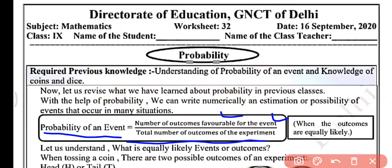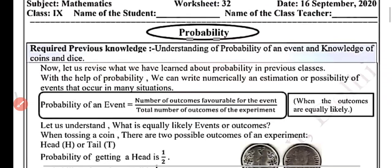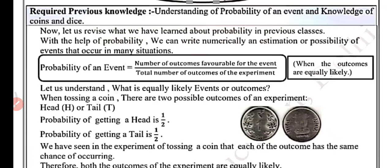Jo outcomes hain, woh event ke favorable kitne hain — woh rahenge numerator mein. Aur denominator mein kya hoga — total possible outcomes. So now let us understand what is equally likely. So now what are the equally likely outcomes or events? When tossing a coin — jab aap coin ko toss karte hain.